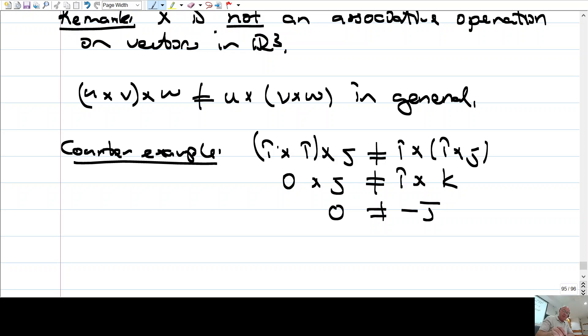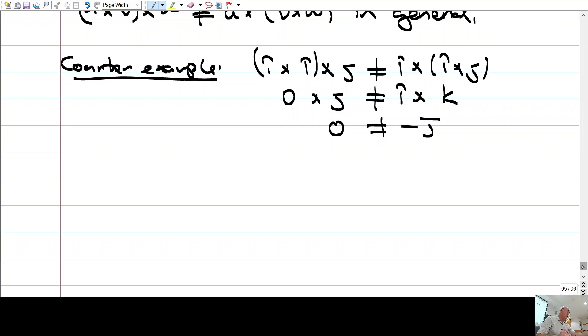All right, so we saw that cross product is not an associative operation.